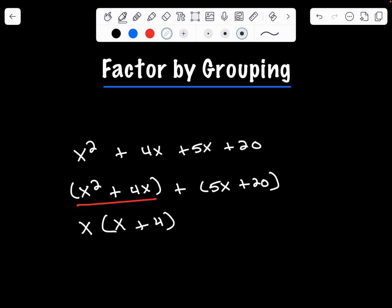The second term, we're going to figure out what our greatest common factor is. Our greatest common factor is 5. 5 goes into 5x x times and goes into 20 four times.